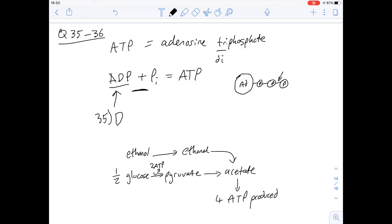If we look at question 36 then, this one's a little bit complicated and it says how many moles of ethanol are needed to produce as much ATP as would be produced by one mole of glucose.